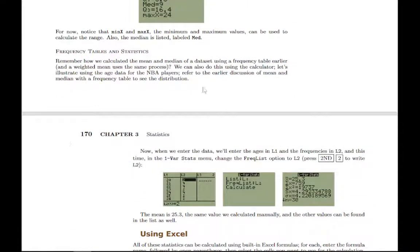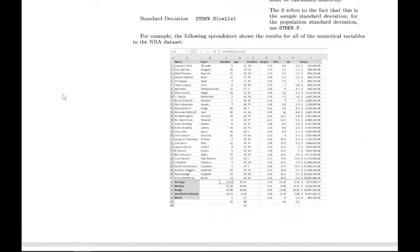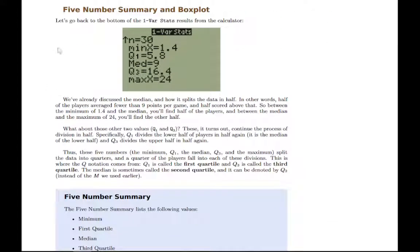There's also a quick discussion on how to use a frequency table with the calculator to find mean or median, and how to do a weighted average that way. There's a quick section on how to use Excel for the same things — that's more or less optional. Then the last thing in the section is what we call the five number summary and the box plot that goes with it. Going to the bottom of the calculator stats output, there are five numbers listed — these five numbers are the five number summary. The median is one of them, and the minimum and maximum are two others.